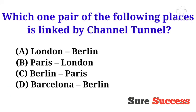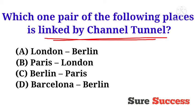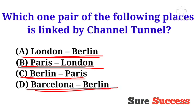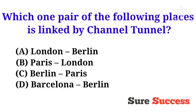Which one pair of the following places is linked by the Channel Tunnel? Options are London-Berlin, Paris-London, Paris-Barcelona, and Paris-Berlin. The correct answer is Paris, London.